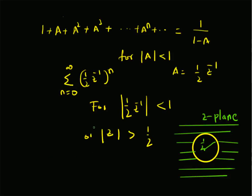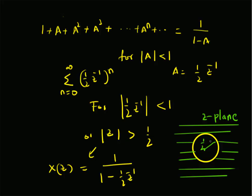For this region, the power series converges and the value is 1/(1 − a), that is 1/(1 − (1/2) * z^(−1)). Therefore, the Z transform X(z) equals 1/(1 − (1/2) * z^(−1)) for values of z outside the circle of radius 1/2.